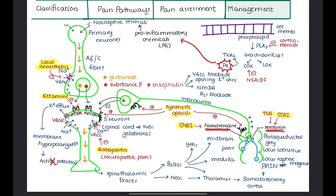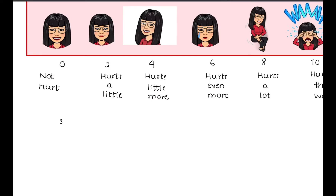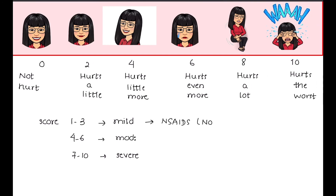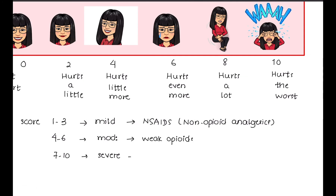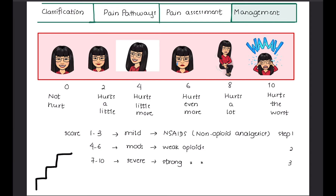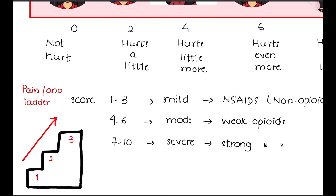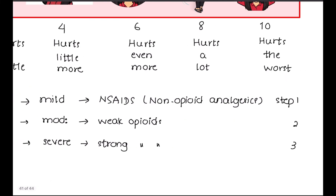The type of medication used depends upon the severity of pain. Scores of 1 to 3 correspond to mild pain, 4 to 6 represent moderate pain, and scores above 7 are considered severe pain. WHO recommends using non-opioid analgesics like NSAIDs for mild pain, weak opioids for moderate pain, and strong opioids for severe pain. This 3-step approach is known as the analgesic ladder, a commonly used guideline for pain management.